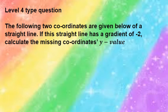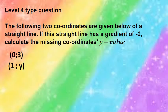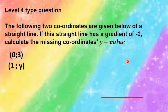Now let's look at the level 4 type question of straight line graphs. Two coordinates of a straight line are given, but one coordinate is incomplete: (0, 3) is one coordinate and (1, y) is the other — we have a missing y value. The straight line has a gradient of negative 2. Calculate the missing coordinate's y value.